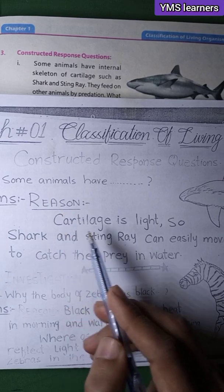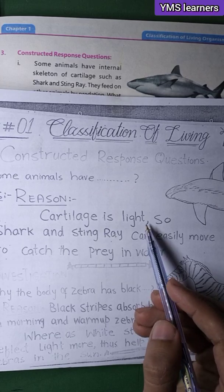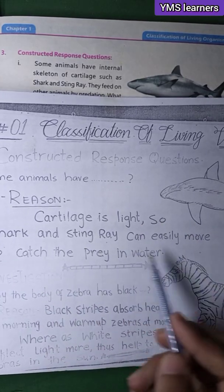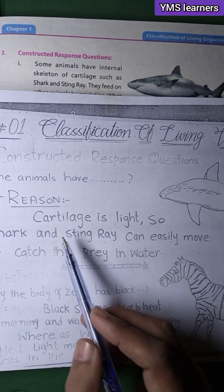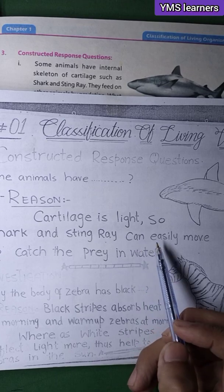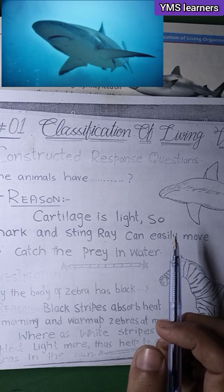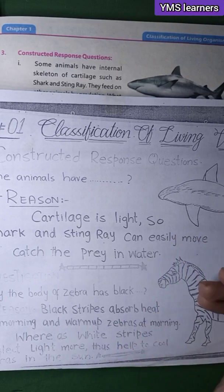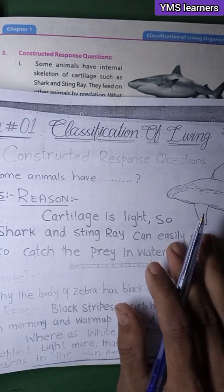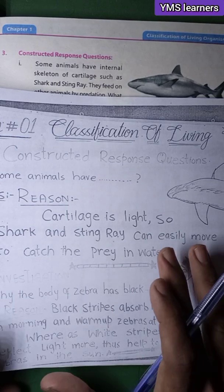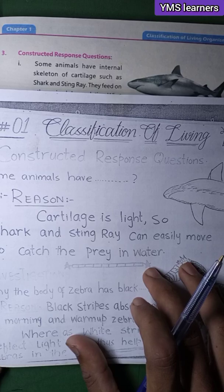Cartilage is lighter. Because cartilage is light, sharks and stingrays can easily move to catch prey in water. This is the answer: cartilage allows easy movement, making it easier for them to hunt and catch prey in water.